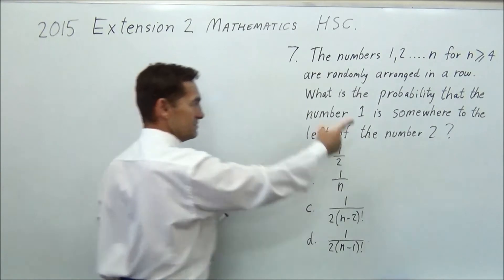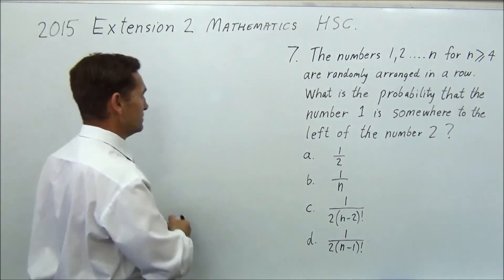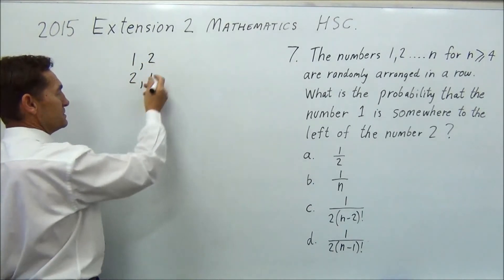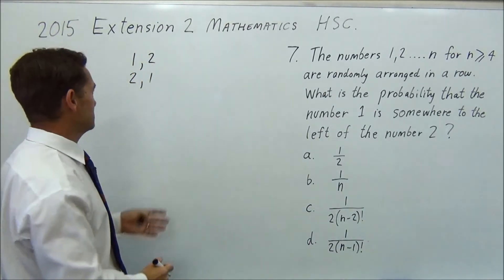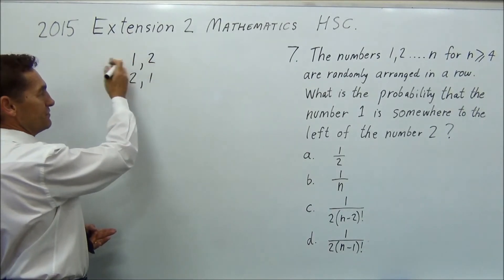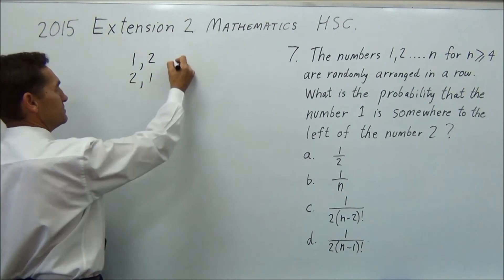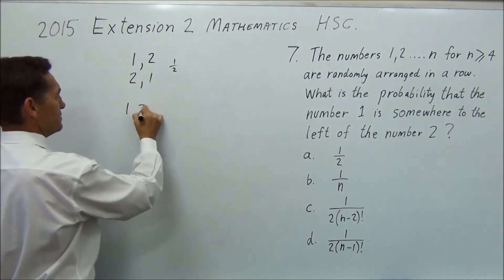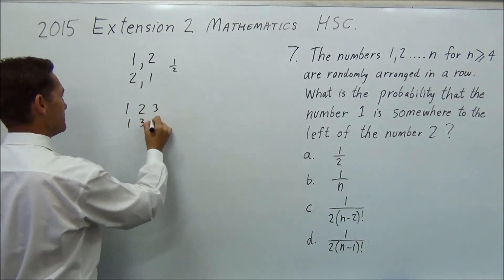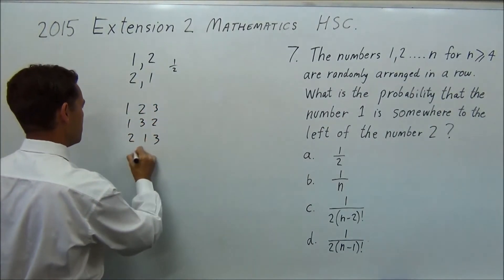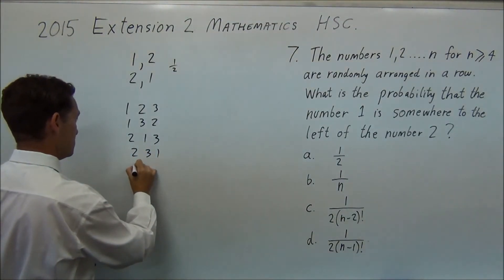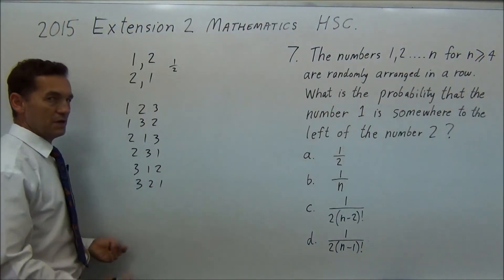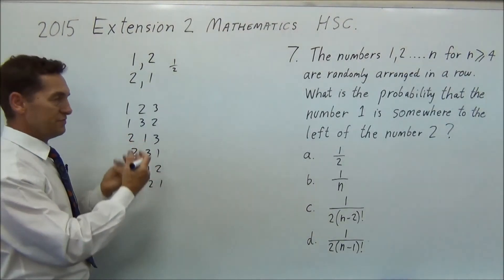While I thought question 3 was the easiest, I'm starting to think that question 7 might be the easiest. If you just think about, for example, the numbers 1 and 2, forget about n greater than or equal to 4, how many ways can you arrange 1 and 2 if there's two numbers? How many times is 1 to the left of 2? Well, 1 out of 2 times, right? So a half. Let's do it with 3 numbers. 1, 2, 3, 1, 3, 2, 2, 1, 3, 2, 3, 1, 3, 1, 2, 3, 2, 1.